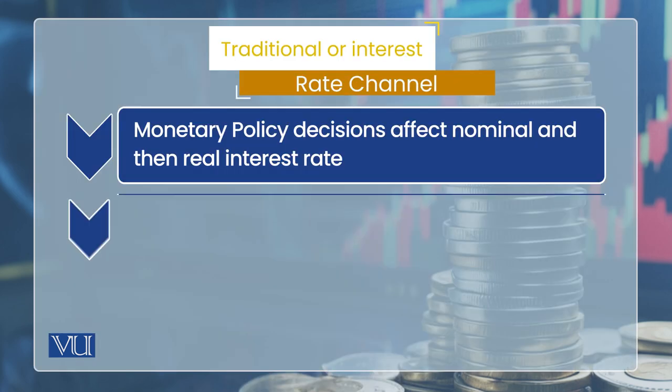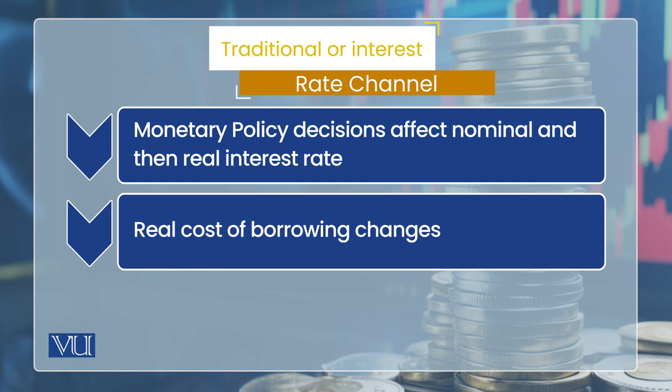First of all, if the expectations of people are given in the short run, then the real interest rate will change when the nominal interest rate changes. This means the central bank changes the nominal interest rate, but the real interest rate change is the actual objective for the economy. The central bank changes the nominal interest rate, which causes the real interest rate to change. Why? Because the real cost of borrowing is the real interest rate.